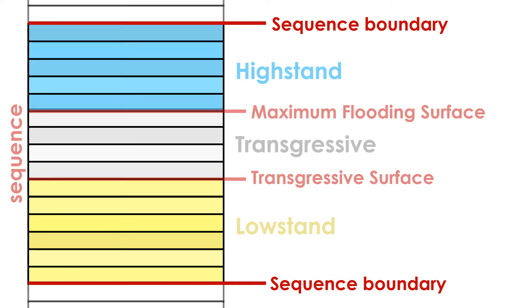Sequences are bounded by unconformities called sequence boundaries. The lower sequence boundary is created by a fallen sea level, resulting in a marine regression. In the process, the fallen sea level creates an unconformity where environments that were previously submerged underwater are now exposed to the air. Erosion of this new aerial environment can create an erosional surface that can be recognized over large distances.